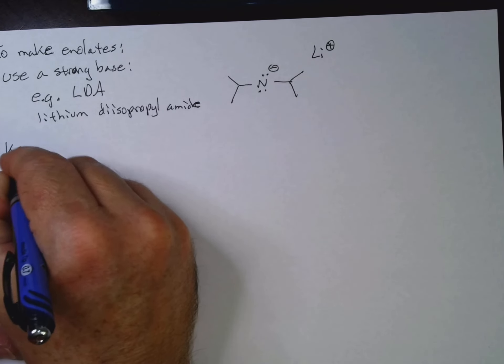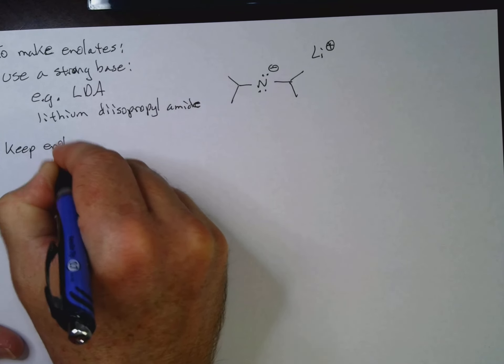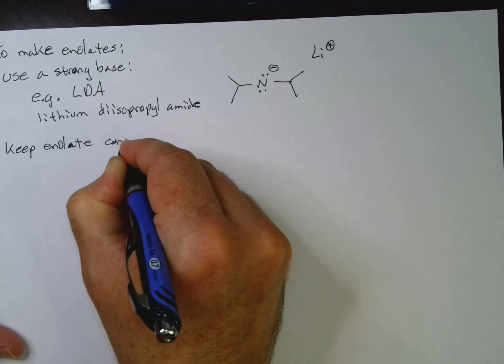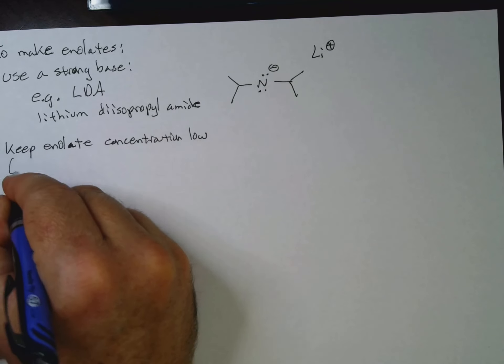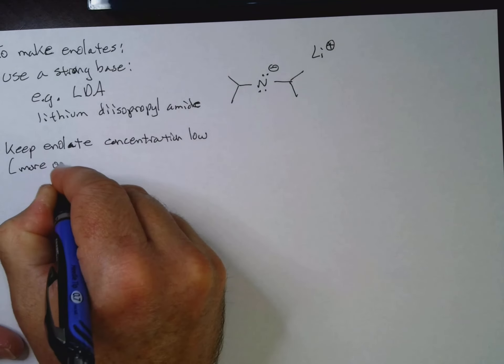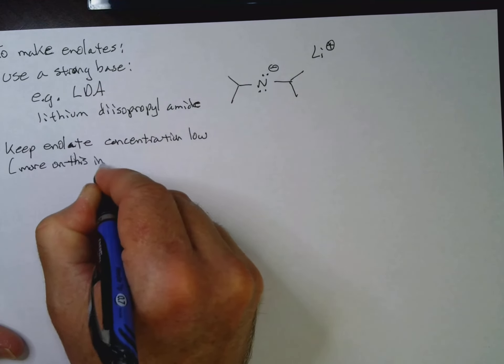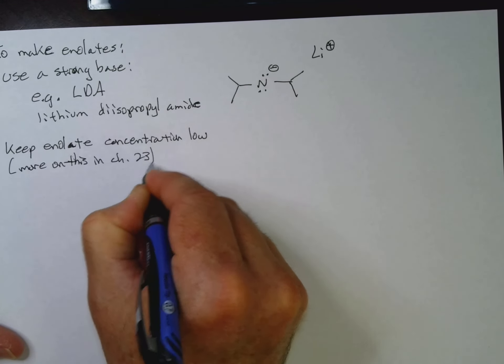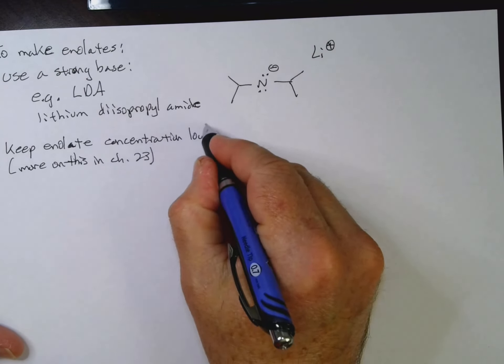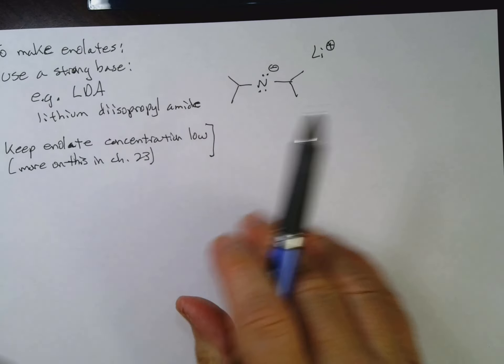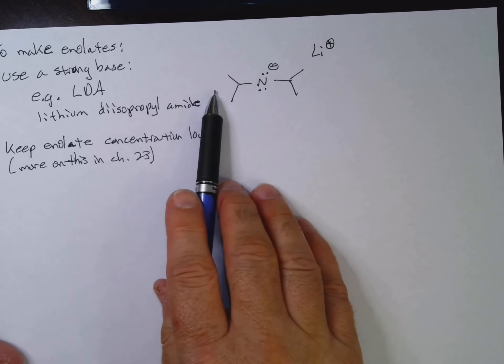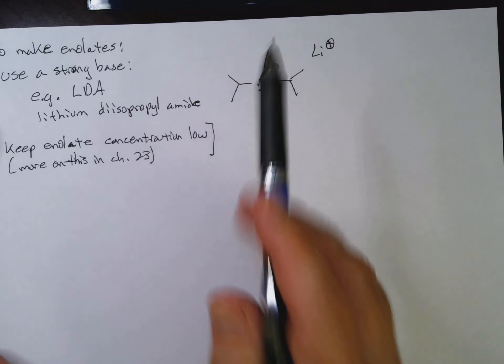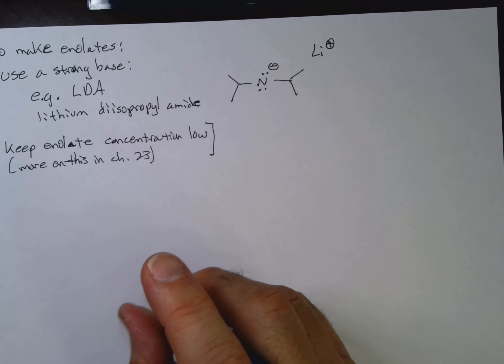Or we could keep enolate concentration low. More on this in chapter 23. So we'll talk about this second one more in chapter 23 when we do some of the carbonyl condensation reactions. But for now, we'll focus on, let's say, using a strong base to make our enolates. And then we'll be doing, be able to do an alkylation. Okay.